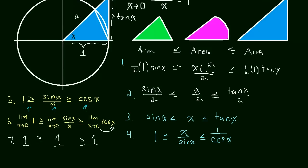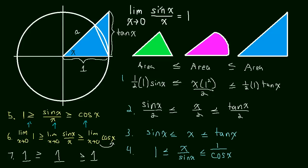So that's a proof that the limit as x approaches 0 of sin x over x equals 1. My guess is that somebody thought of this because they needed to take the derivative of the sine function. If you remember taking the derivative of sine, we had to make use of this limit — if we didn't know it, we wouldn't have been able to take the derivative. See you in the next video.